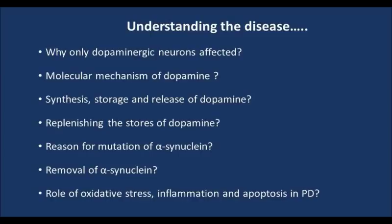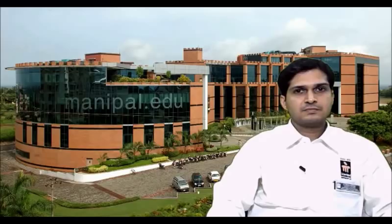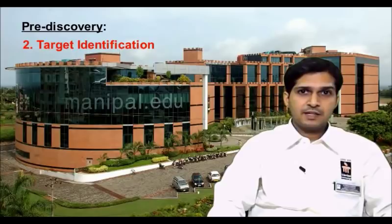So you see, a deeper understanding of physiological, biochemical and pathological mechanisms that play a role in the disease origin and its progression is very important. The next step is target identification. Here, the component of the disease is chosen as a target for the drug to act on, with the assumption that modification of the target will modify the disease.